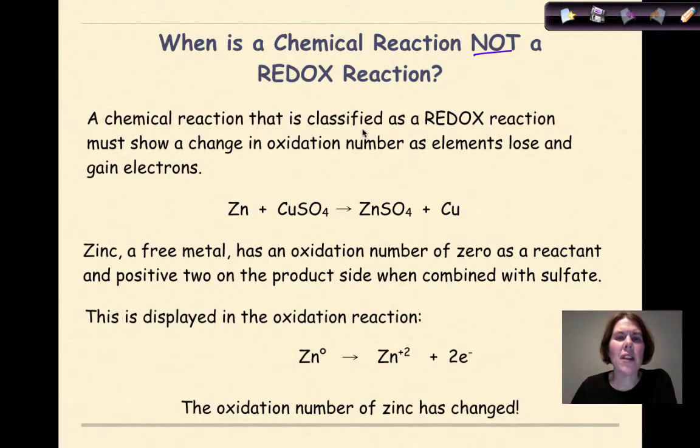Remember, a chemical reaction that is classified as a redox reaction must show a change in oxidation number as elements lose and gain electrons. Let's look at this equation down here. Zinc plus copper sulfate yields zinc sulfate and copper metal. Zinc, a free metal, has an oxidation number of zero. So let's put a zero over the top as a reactant and a positive two on the product side when combined with the sulfate.